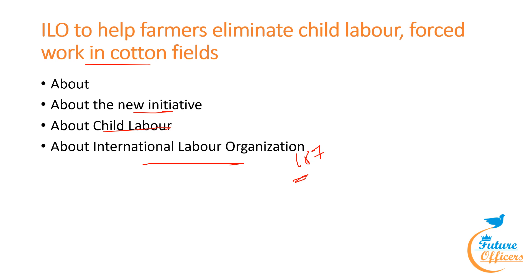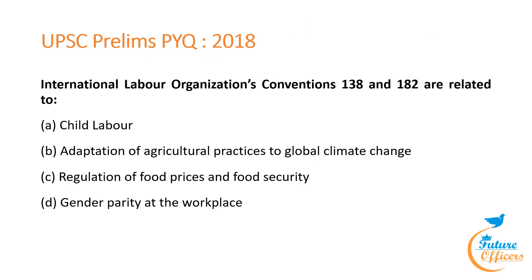The ILO's objectives are to promote and realize standards and fundamental principles and rights at work, create opportunities for decent employment for women and men, enhance social protection coverage, and strengthen tripartism and social dialogue. A UPSC Prelims 2018 question asked: ILO Conventions 138 and 182 are related to — answer: child labor.